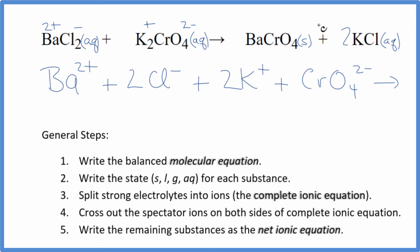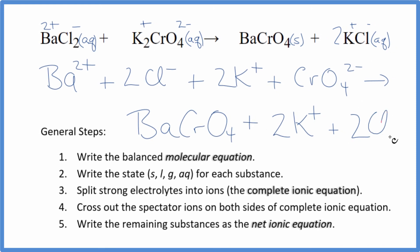For the products, we don't split solids apart in net ionic equations, so we're just going to have this barium chromate here. It'll stay together. And then potassium positive, the chloride ion negative, 2 potassium ions plus 2 of the chloride ions. So this is the complete ionic equation.